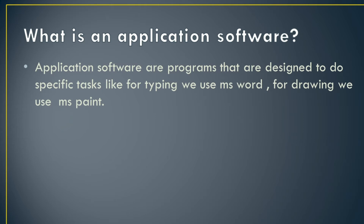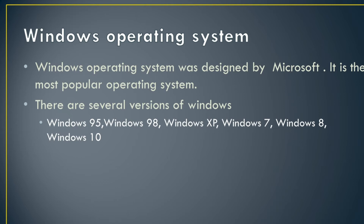What is an application software? Application softwares are programs designed to do specific tasks. For typing we use Microsoft Word, for drawing we use MS Paint, for calculation we use the calculator available in the computer. All these softwares that are used to do some specific task are known as application software.